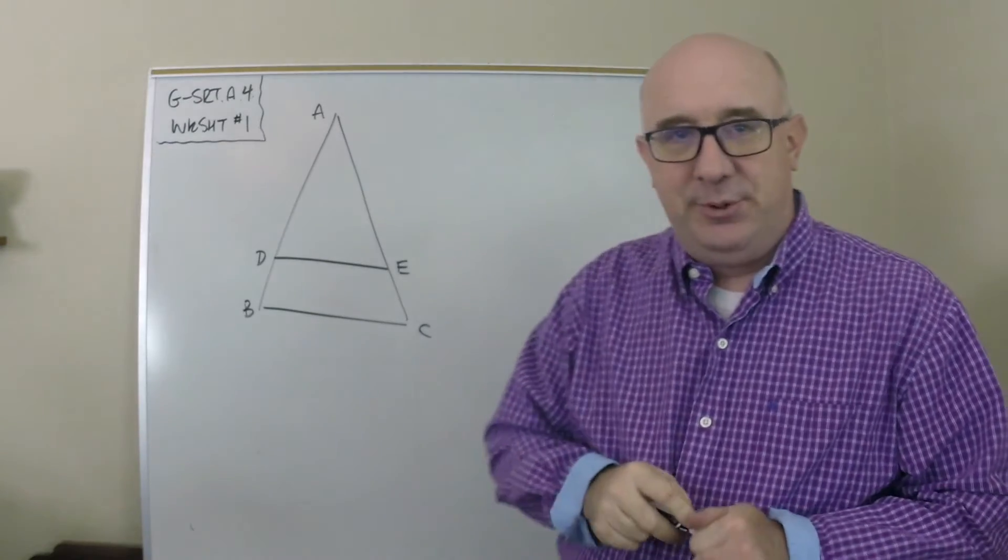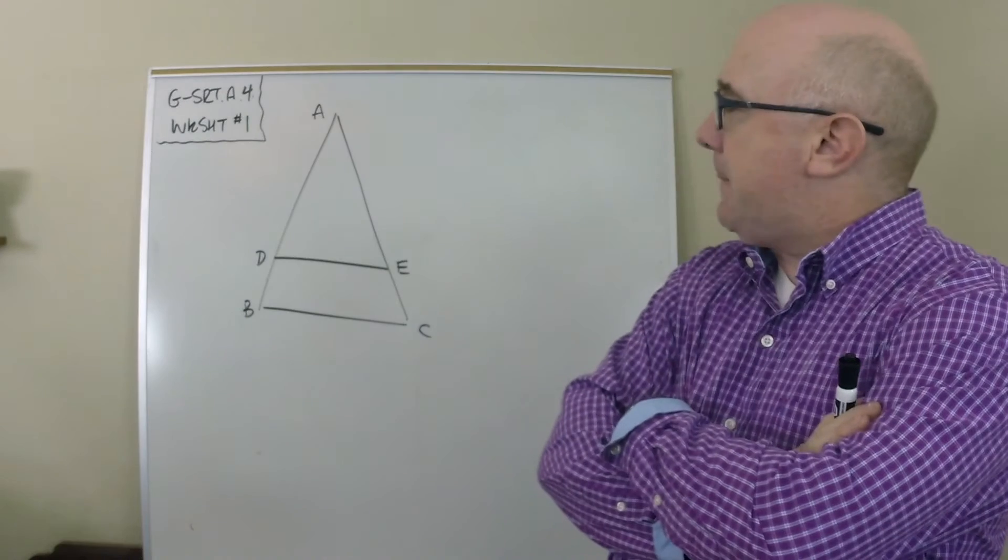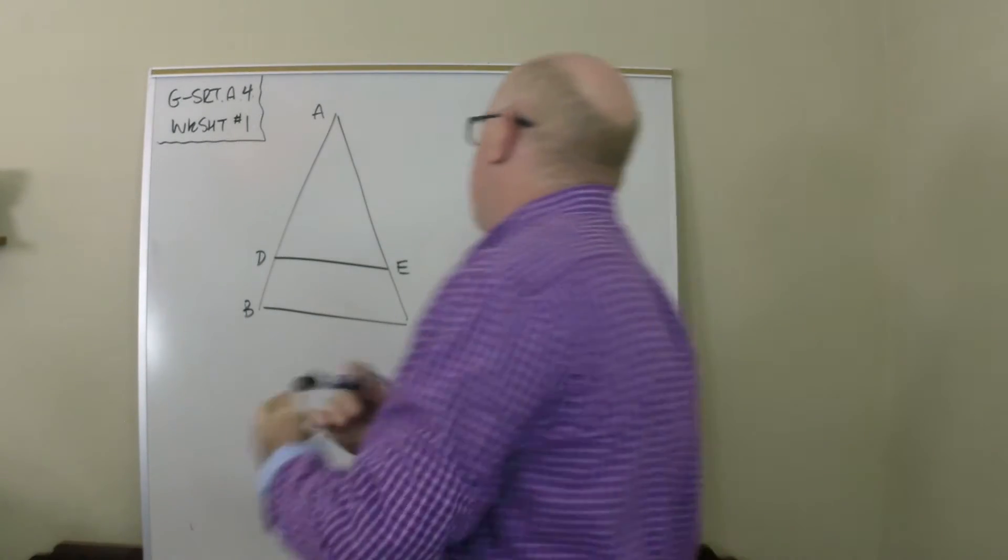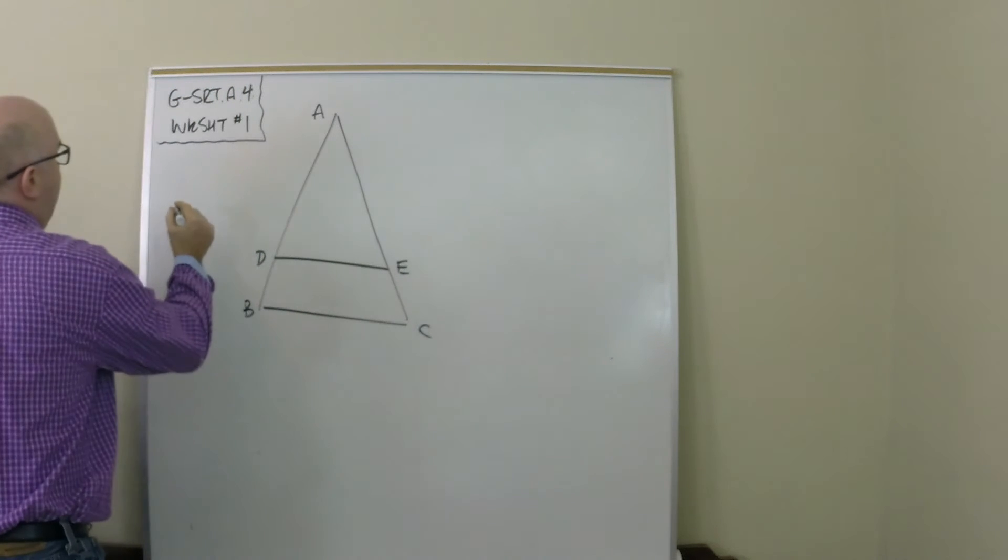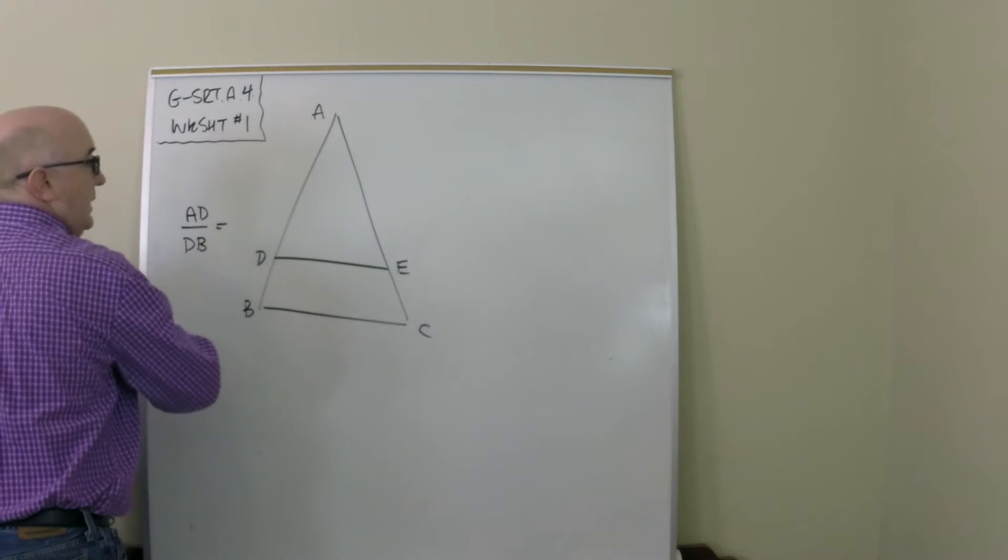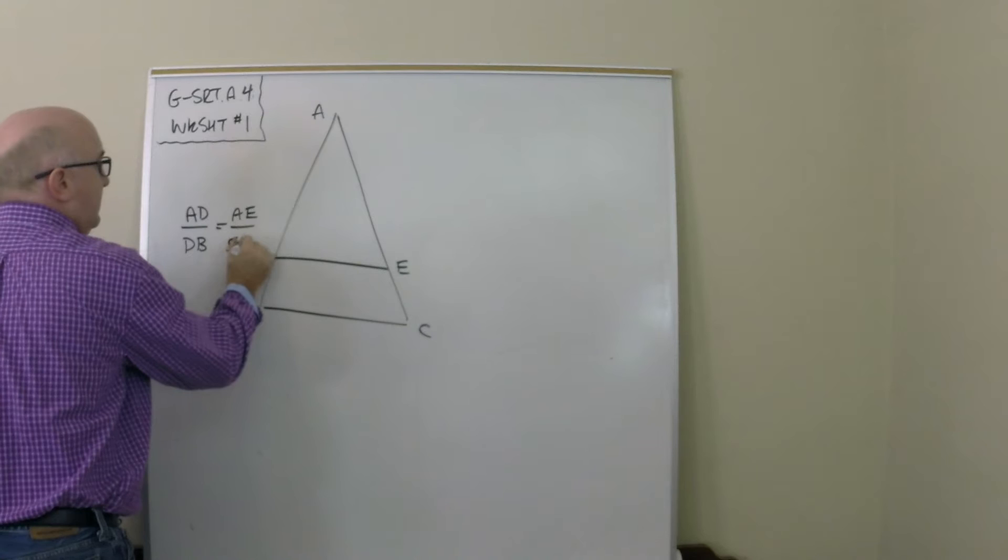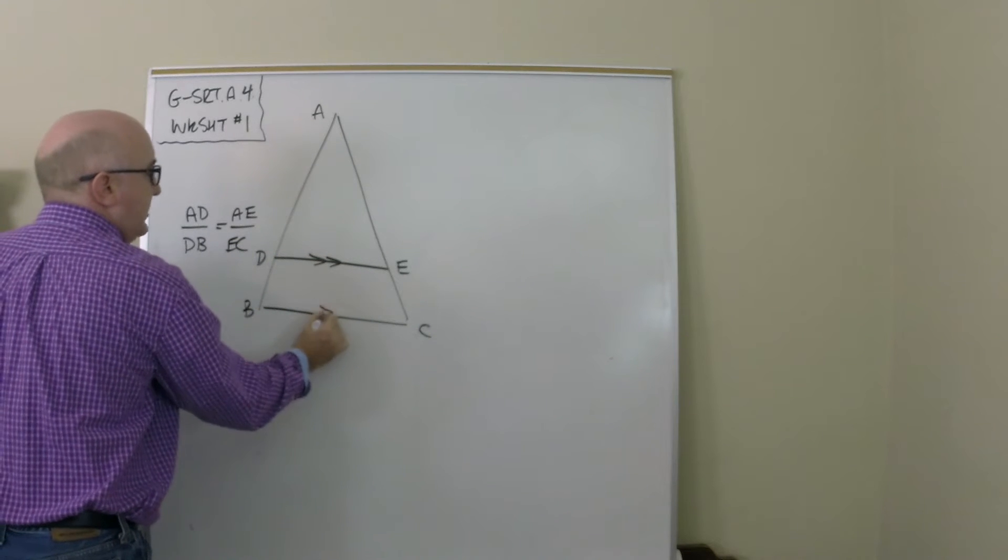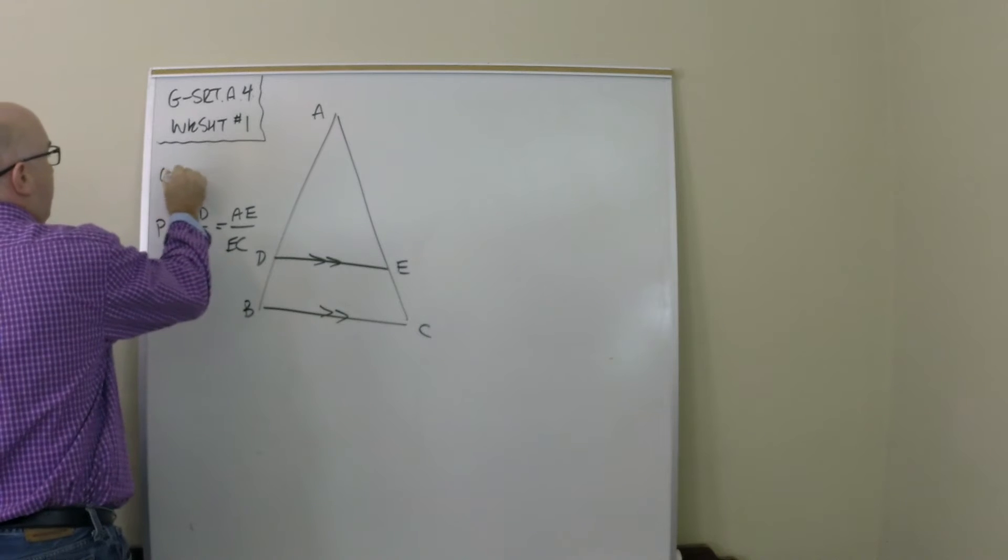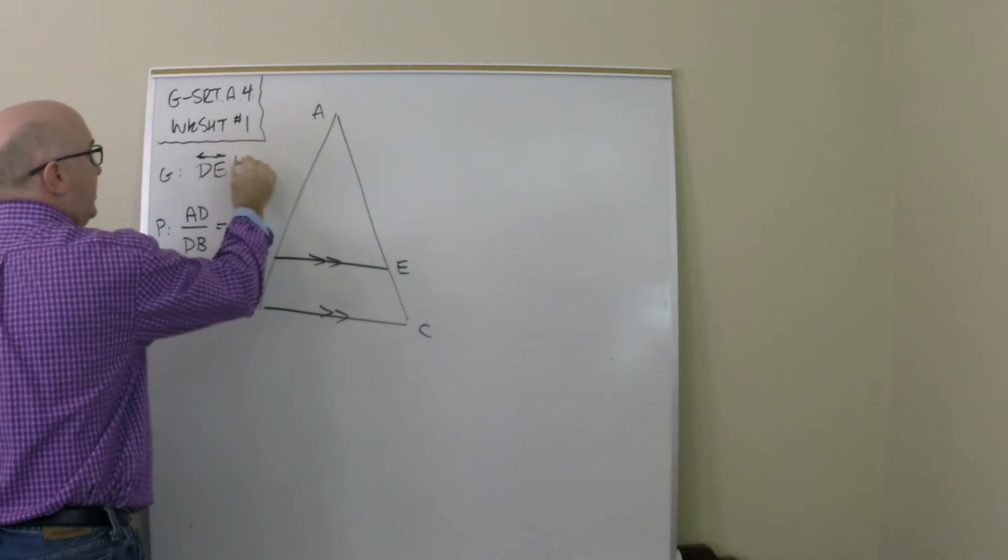This is also about proof and a little bit tricky. First of all, what they want us to prove is that AD to DB is the same as AE to EC. And what they give us is that these are parallels, so this is what they want us to prove, given that DE is parallel to BC.